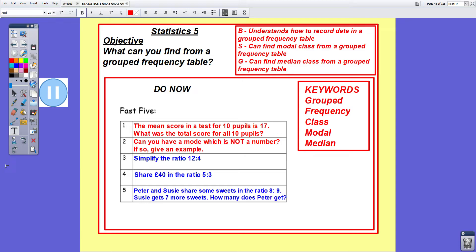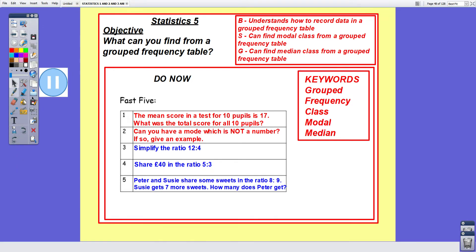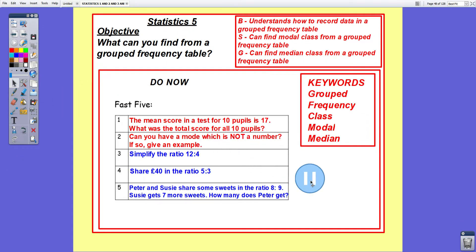But before we start I'd like you to have a go at today's Fast Five. You'll notice that the first two questions are in red, the last three questions are in blue. Where the questions are in red they have something to do with the current topic and where they are in blue they are questions to do with a previous topic. Please pause the video and have a go at these five questions.